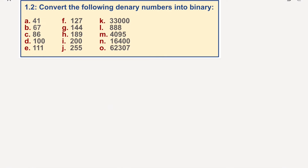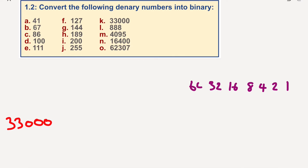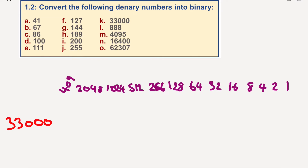Now let's have a go at 33,000. This is going to be a big number. We go: 1, 2, 4, 8, 16, 32, 64, 128, 256, 512, 1024, 2048, 4096, 8192, 16384, 32768. I'm not going to go any higher than that because that would obviously be 65,000 and above.